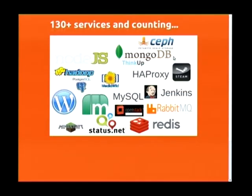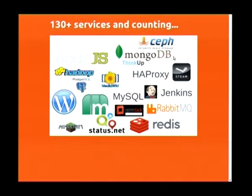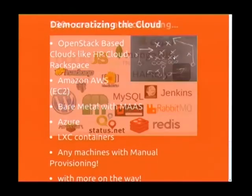We have about 130-something services currently charmed and available in our charm store — this is just a sampling. Things like Node.js, WordPress, MediaWiki, MySQL, Jenkins. If you want to run Steam servers now that Steam OS is coming out, we have Steam game server charms so you can deploy game servers on the fly and do a lot with orchestration for services.